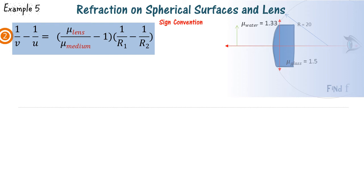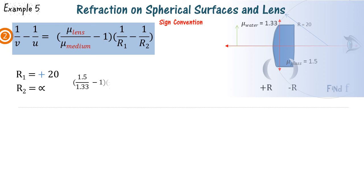In the next example, the object and the lens are both placed in water. The radius of curvature of the outer surface is 20, and since it bulges outwards we take R1 as plus 20. R2 is taken as infinity since it's a flat surface. We find f equal to 160, signifying it is a convex lens.